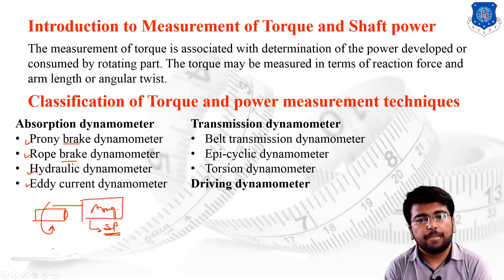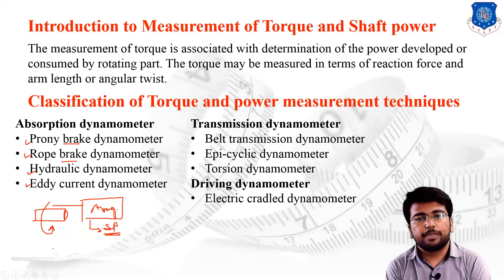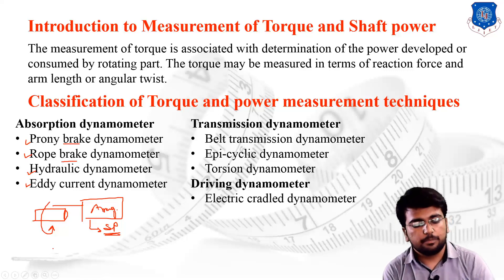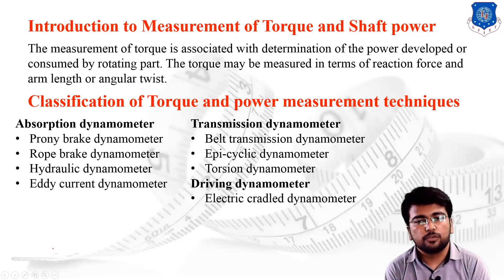The last category is the driving type dynamometer. Its single application example is the electric cradle dynamometer, which is based entirely on electric circuitry and sensors useful for measuring shaft power. This concludes the basic classification of torque and shaft power measuring techniques.